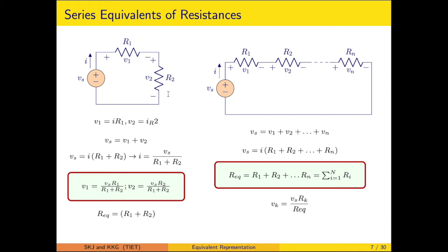The voltage across each individual resistor depends on its resistance value, so resistances can be selected appropriately. The equivalent resistance seen by the source is the sum of the two resistances. Extended to n resistors in series: Req = sum of all resistances, and the voltage across the kth resistor = Vs × Rk / Req.